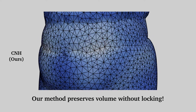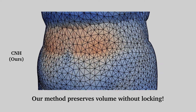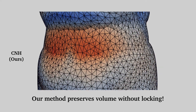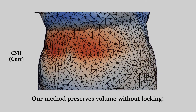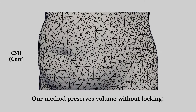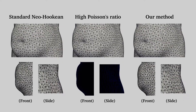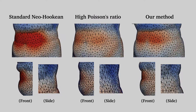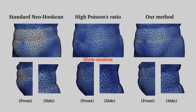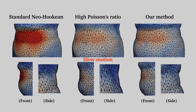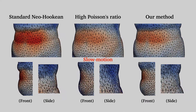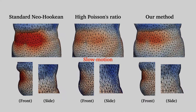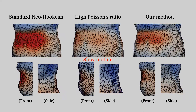On the other hand, our method completely preserves volume without locking. Compare these three results side by side. The color scheme shows the volume change per tet. Notice the realistic bulging that our method produces when compared to the other methods.